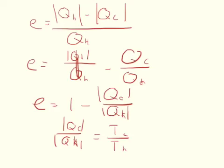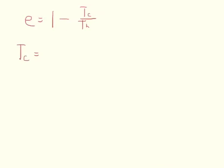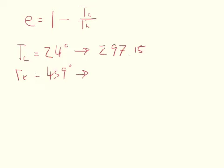And so now we can use our temperatures and we can substitute into this equation. So now all we need to do is plug in our values for the cold reservoir and the hot reservoir, which 24 degrees and 439 degrees is what I got. And we need to convert these to Kelvin, so 24 plus 273.15 is 297.15, and then 439 converts to 712.15.